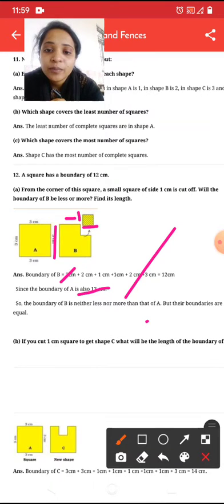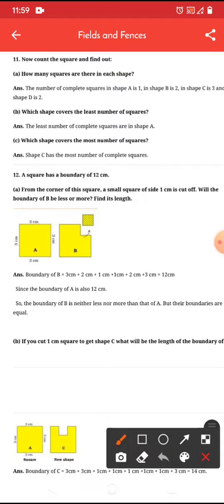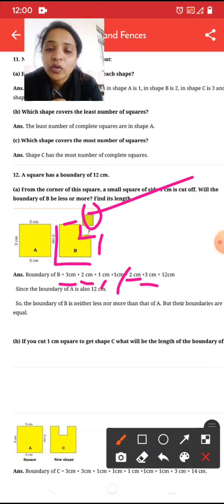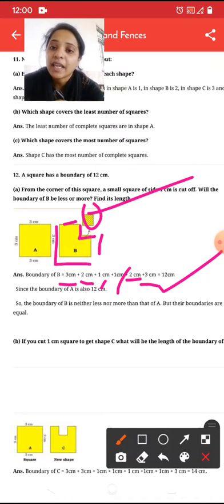So, the boundary of B is neither less nor more than A, but the boundaries are equal. See, they are telling that both of the boundaries are equal. See, what they have done? They have calculated this 2, 3, 3. Let me show you. This 3 and this 3. So, here 3 is there. Here 3 is there. Then, this 2 and this 2. So, 2 centimeter, 2 centimeter. And, this one and this one. So, 1, 1. This square already we have taken out. So, no need to count that one. So, the 3 plus 2 plus 1 plus 1 plus 2 plus 3. It's 12 centimeter. So, both of the squares, A square and the B square, both of them were having the same boundary length.